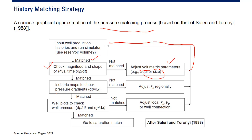If the pressure gradient still doesn't match, we adjust horizontal permeability regionally. If matched, we check well plots to check well pressure — if not matched we adjust local horizontal permeability and local porosity or well connection. If pressure matching is achieved, we go to saturation matching. So first we match pressure, then saturation can come later: pressure matching first, then saturation matching.